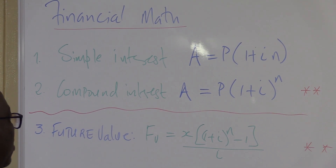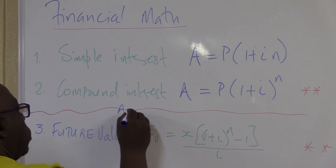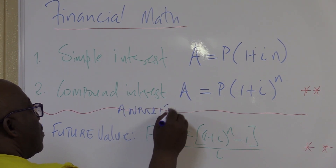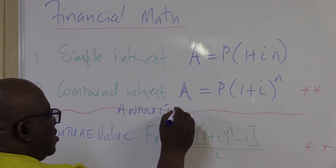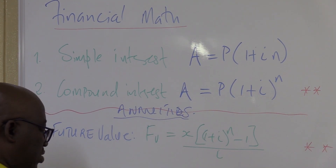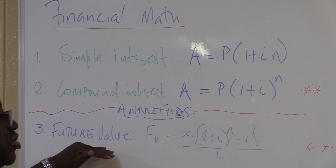In grade 11 and 12 you go to the next topic — I refer to them as annuities. This is where you start to make regular payments.